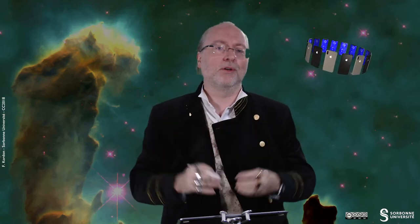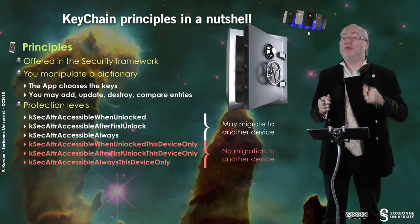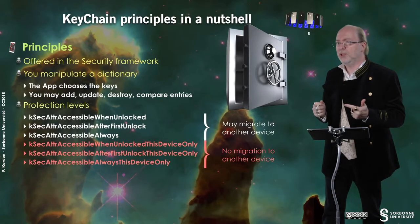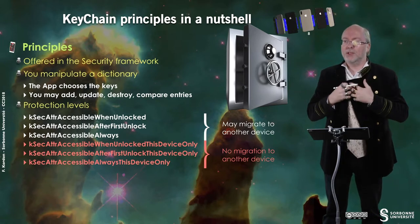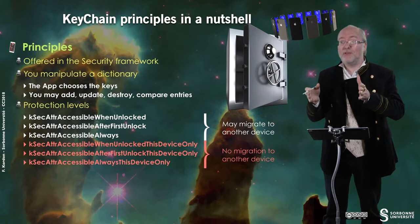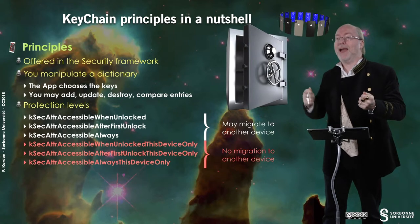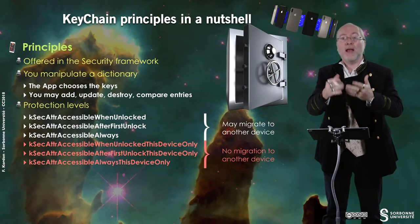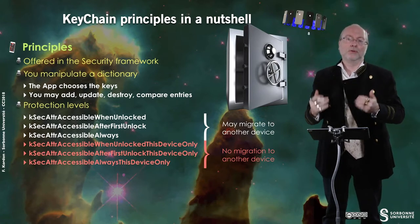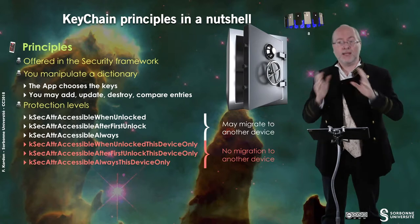The result is that if you don't know what is what, it's much more difficult to retrieve. You may add, update, or destroy information, and you may also compare entries. You can compare an entry of the dictionary with a given value, but you never fetch the value from the dictionary. Once it's in the dictionary, you provide a new value to be compared and receive a yes or no — but you cannot retrieve the value directly. It's stored in a safe place.